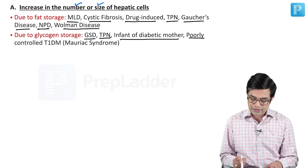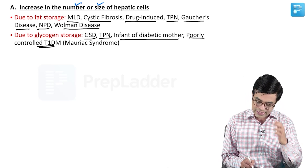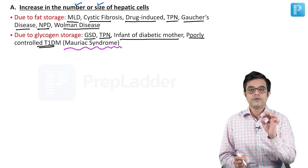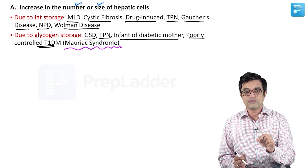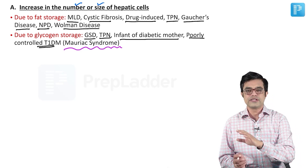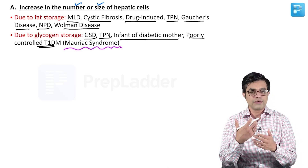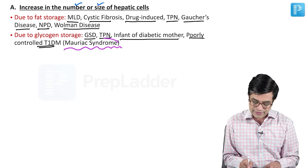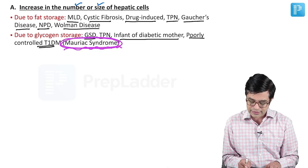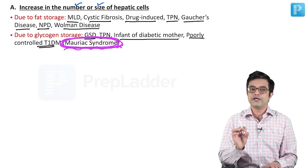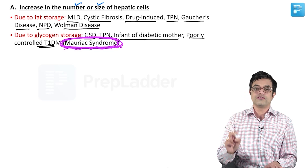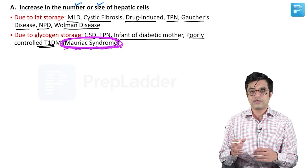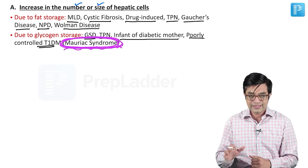It occurs in poorly controlled type 1 diabetes, which is called Mauriac syndrome — please remember this as a potential MCQ. Mauriac syndrome is poorly controlled type 1 diabetes with hepatomegaly, along with growth and developmental problems. These are the two essential features. Mauriac syndrome is commonly seen in adolescence, not in very young children or old age.